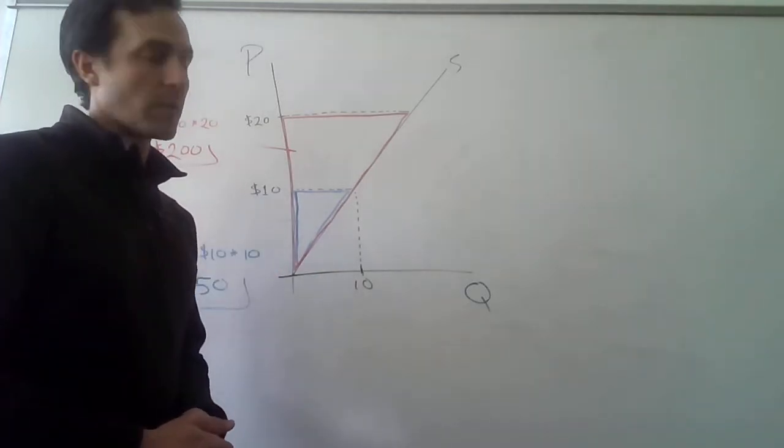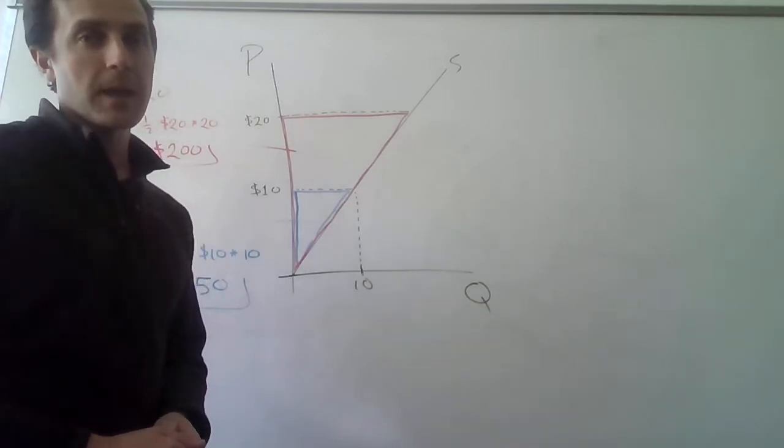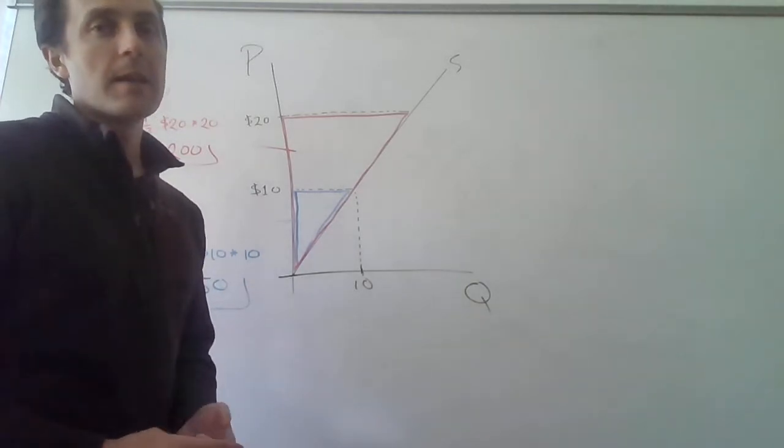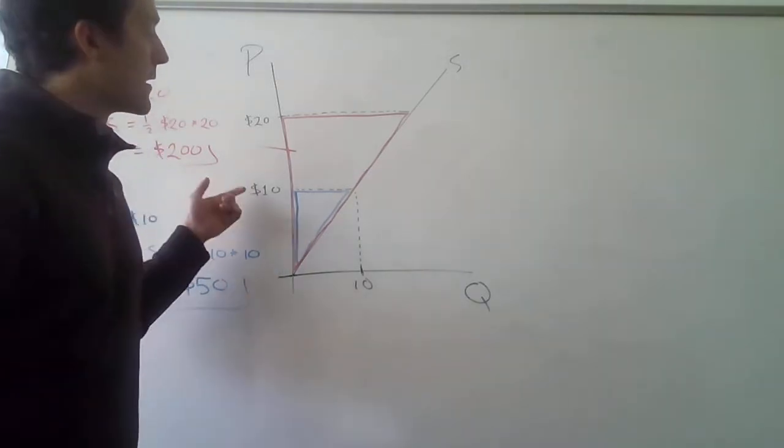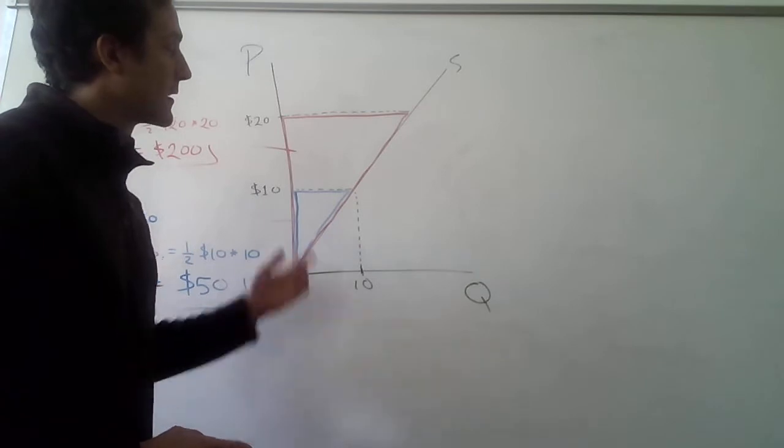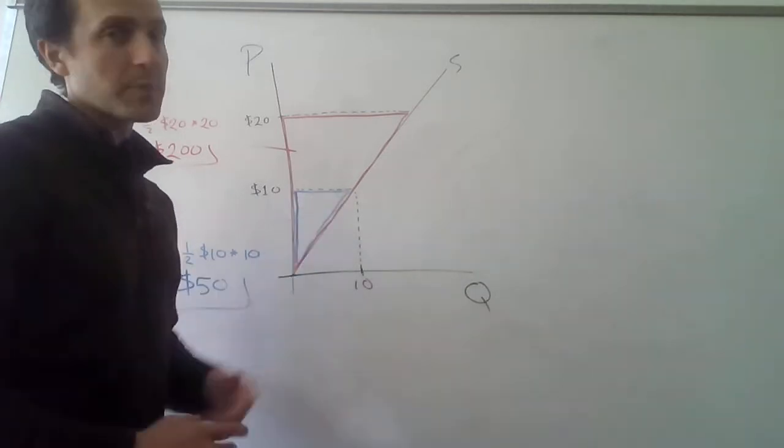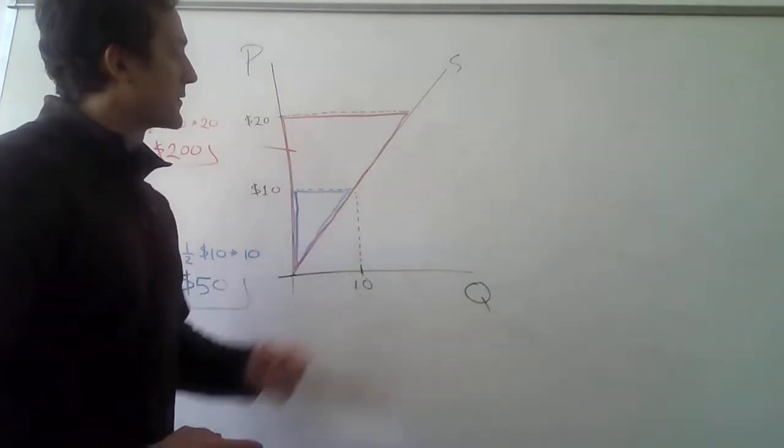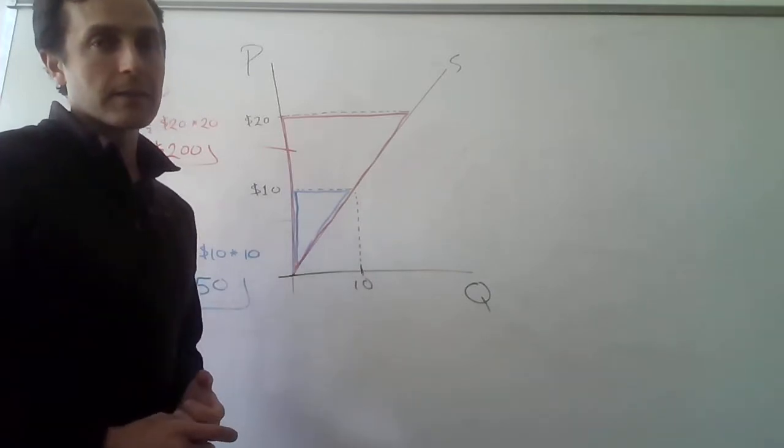Now, remember, producer surplus, how we find that is by finding basically the area below the price, whatever the price level is, below the price and above the supply curve, right? All the way to the quantity that is supplied.